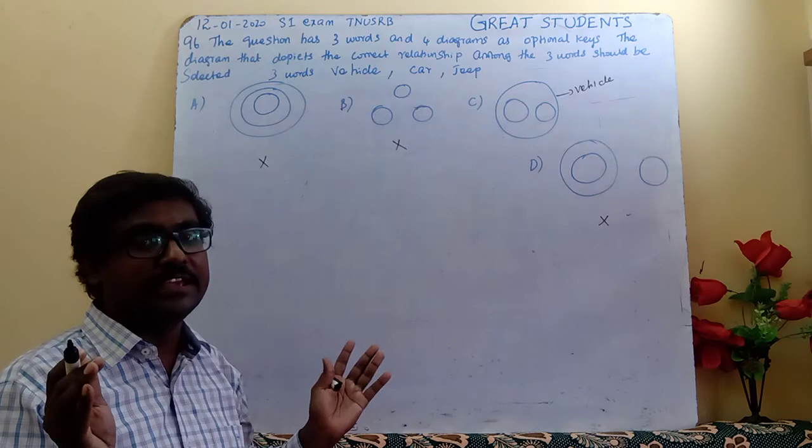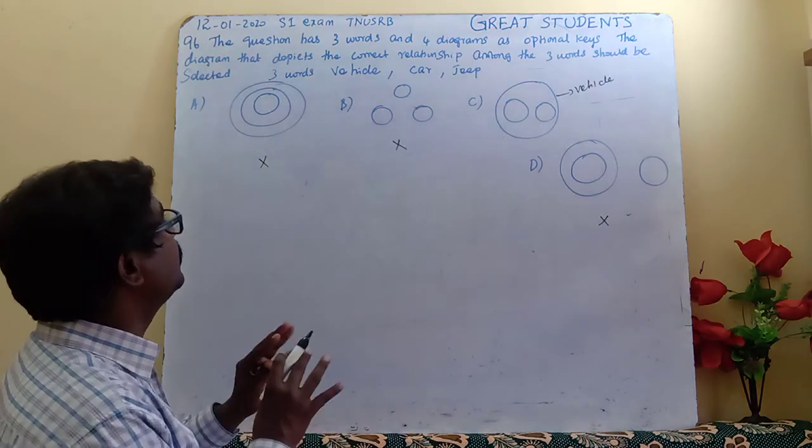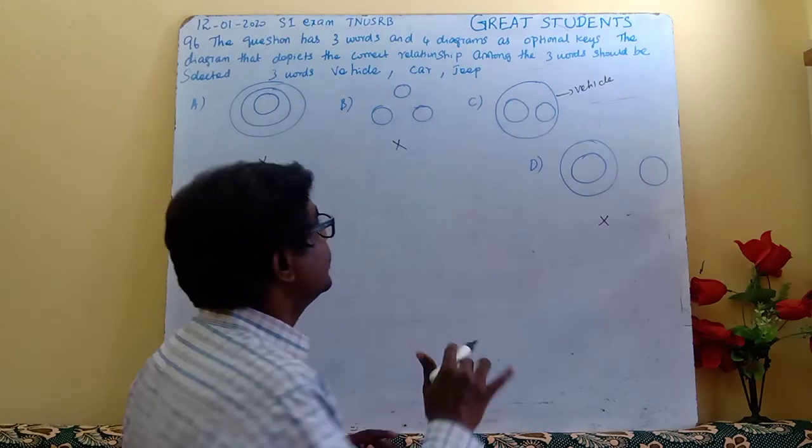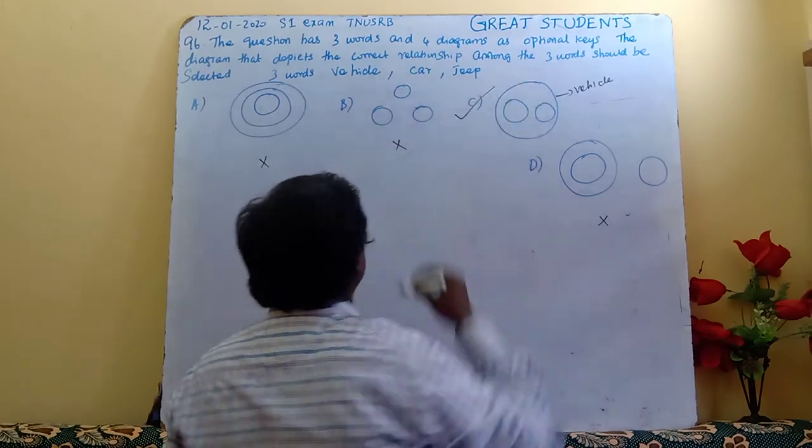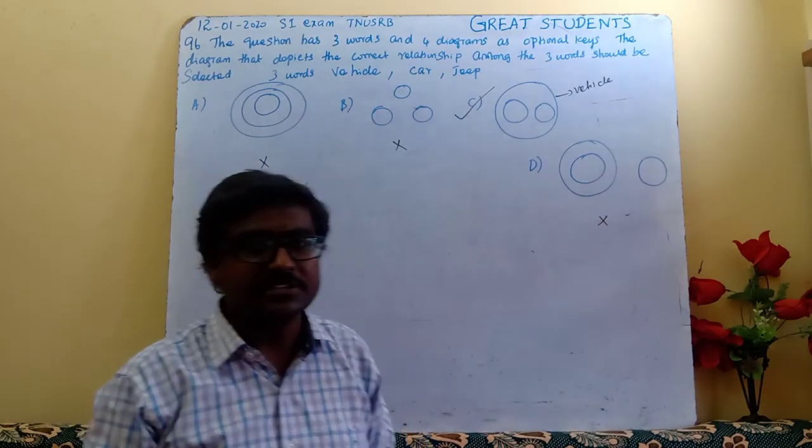The surrounding area and construction setup show that vehicle is a totally different subset. So option C is correct. Thank you for watching the video.